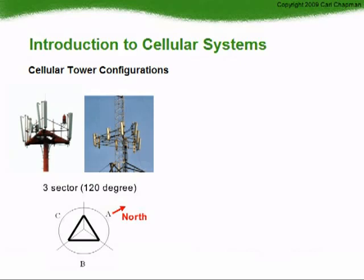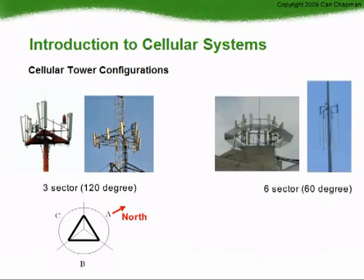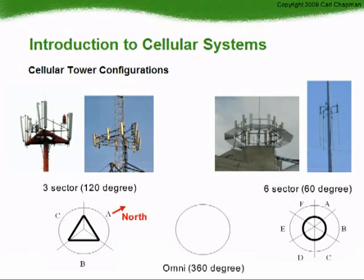It is common for operators to configure three-sector cell sites around freeways and main roads as two-sector sites. Another configuration is the six-sector or 60-degree cell site, which can be visually identified by the hexagon structure on top of the tower. The sectors are typically named in a clockwise manner A through to F, or U through to Z. The A sector points north as an industry standard, and each sector has a different group of channels. The third type is the omni-directional site, sometimes seen in rural environments with low subscriber levels, where there is only one group of channels available for the whole cell site.